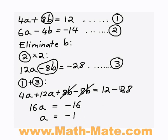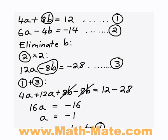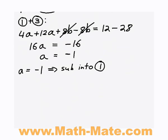So I've already found out one of my variables, a equals negative 1. So now I want to find out what b is equal to. I can do this by taking my value of a equals negative 1 and substituting it into one of my equations. In this case, I'm going to substitute it into equation 1. So I'll go up and look at equation 1, 4a plus 8b equals 12.